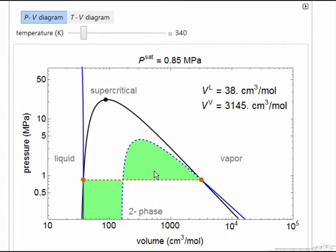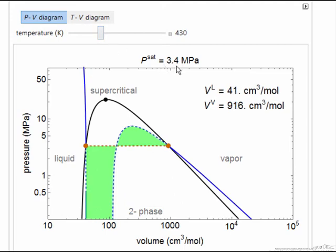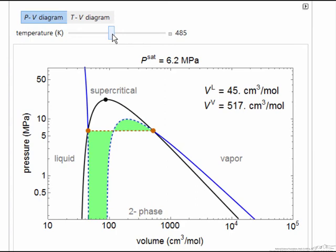And remember these volumes are equal only if things were on a linear scale, and as I increase the temperature, then of course the saturation pressure here increases, and here are the volumes of the liquid and the vapor at that pressure that are in equilibrium.